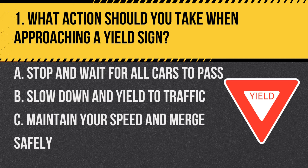Question 1: What action should you take when approaching a yield sign? A. Stop and wait for all cars to pass. B. Slow down and yield to traffic. C. Maintain your speed and merge safely. Answer: B. Slow down and yield to traffic. When you see a yield sign, it means you must slow down and yield the right-of-way to traffic in the intersection you are crossing or roadway you are entering.